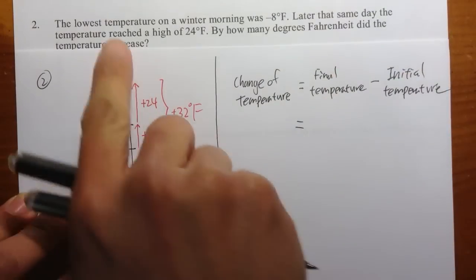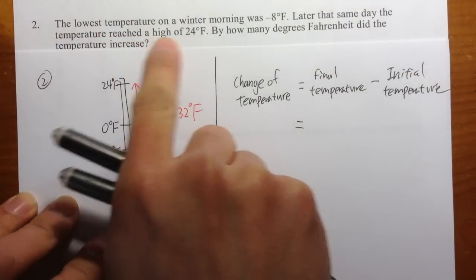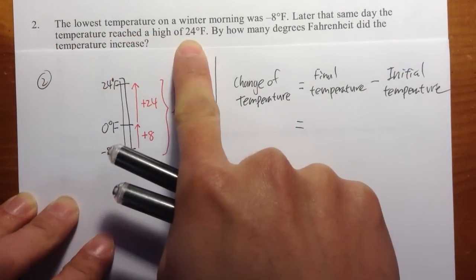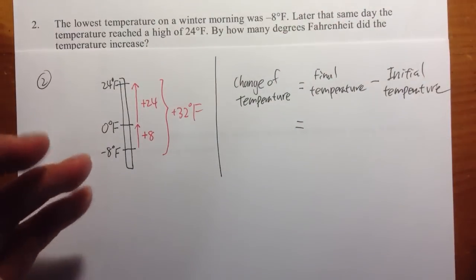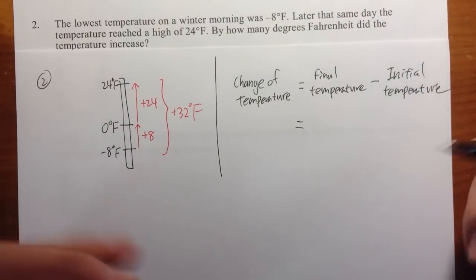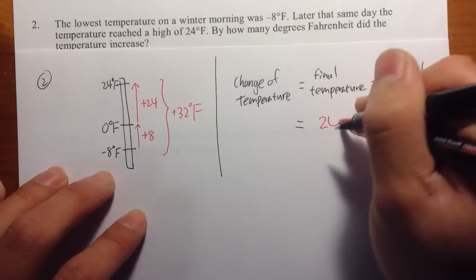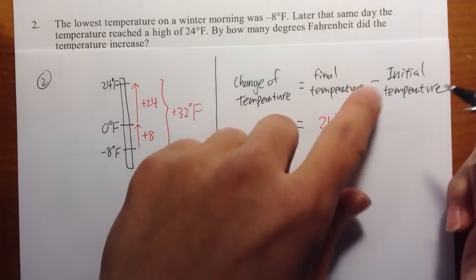So, in this case, you said the temperature reached a high of 24 degrees Fahrenheit. And that's the final temperature, because that's what you measure at the end, right? So I will take 24, and then I will subtract.